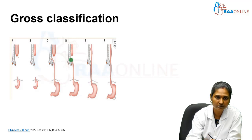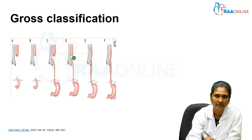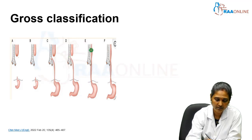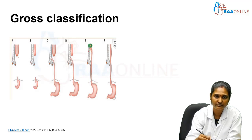Type D has both a proximal fistula and a distal fistula. Type E is commonly called the H-type fistula — it looks like the letter H. Type F represents the normal configuration.